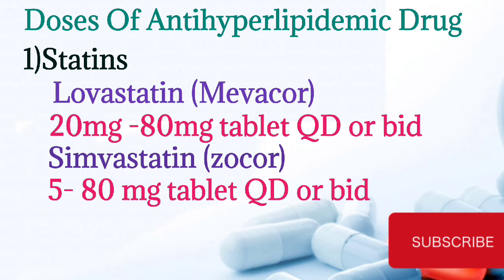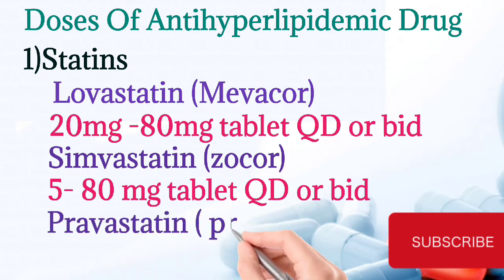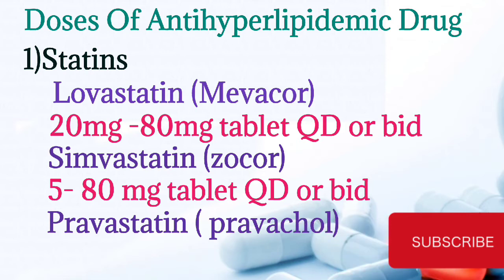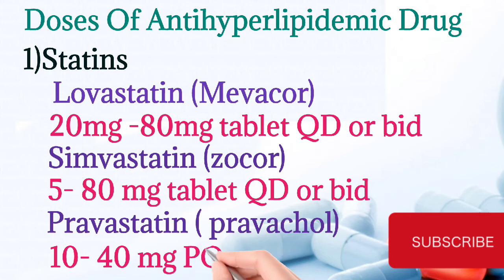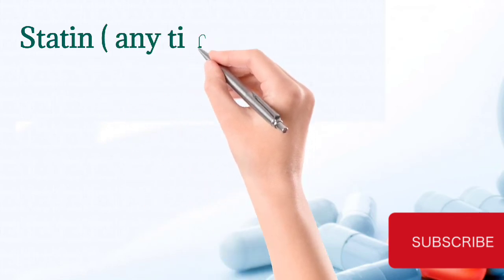Third one is pravastatin, brand name Pravachol, and the patient can take 10 to 40 mg tablet per oral every day. Lovastatin and simvastatin are pro-drugs. These three drugs have shorter half-life, and maximum daily doses range from 20–80 mg, 5–80 mg, and 10–40 mg respectively.